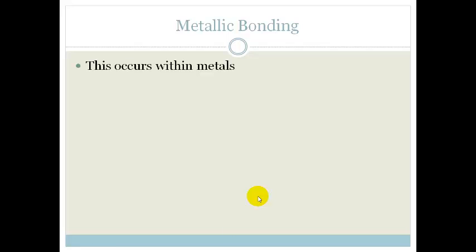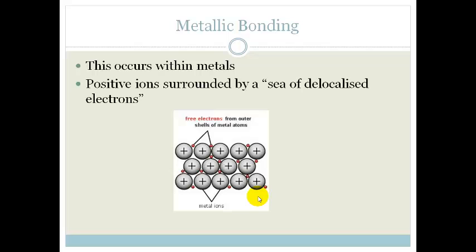Metallic bonding. Metallic bonding is very different. This occurs within metals. The positive ions are surrounded by a sea of delocalized electrons. So basically what you have is these electrons that can move around the positive ions. They do not belong to one specific positive ion or cation. They can move around all the time. Examples of metallic bonding are what happens in copper or sodium by itself.